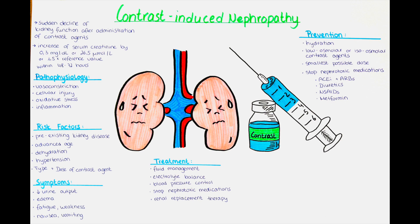Contrast agents can promote the generation of reactive oxygen species, which are highly reactive molecules that can cause oxidative stress and damage cellular structures within the kidneys. Additionally, the administration of contrast agents can trigger an inflammatory response, activating inflammatory mediators and immune cells, leading to the release of pro-inflammatory cytokines and recruitment of inflammatory cells, which further damages renal tissues.